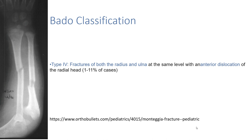This is Type 4 fracture, where we can see a fracture of the radial shaft at the same level together with anterior dislocation of the radial head.